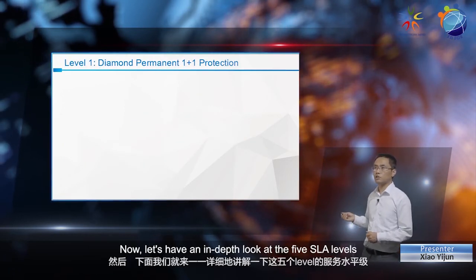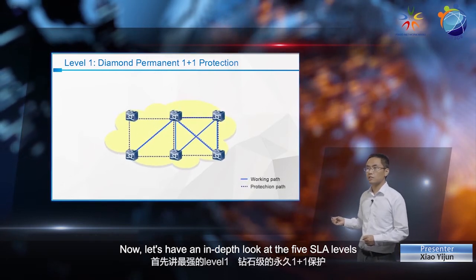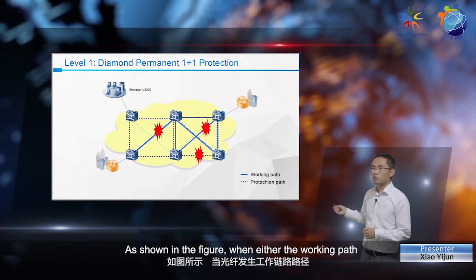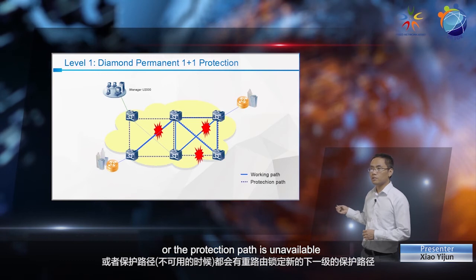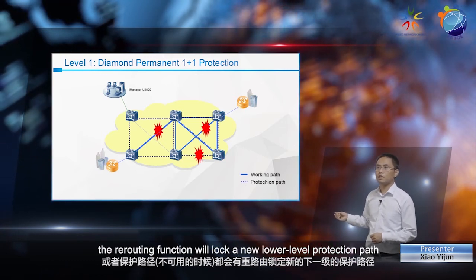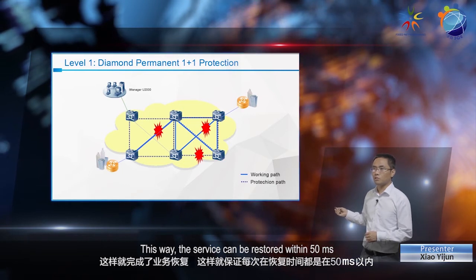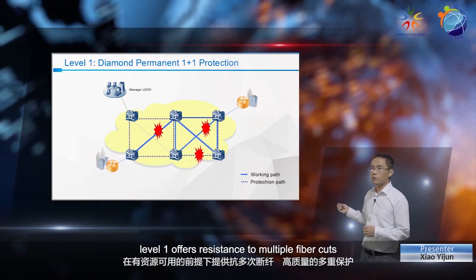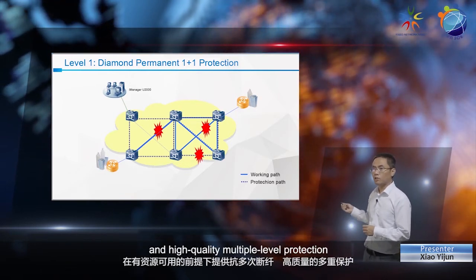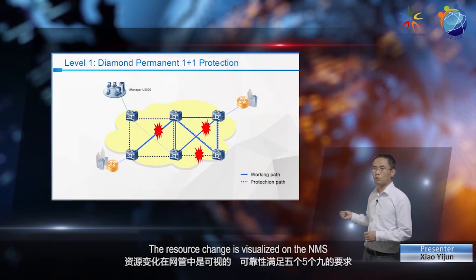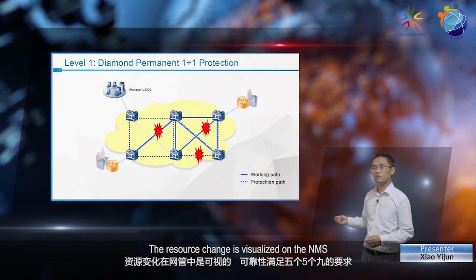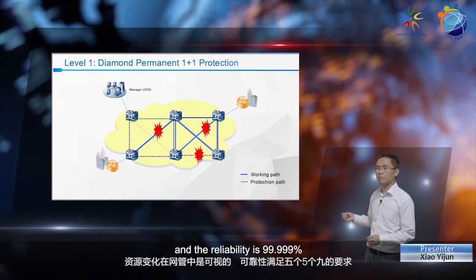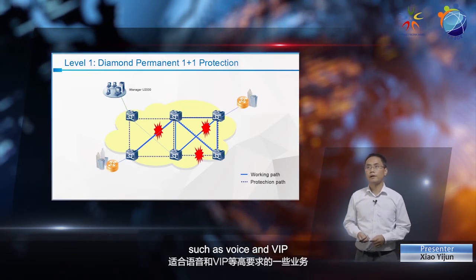Now let's have an in-depth look at the five SLA levels. Level 1 offers diamond permanent 1+1 protection. As shown in the figure, when either the working path or the protection path is unavailable, the rerouting function will lock a new lower level protection path. This way, the service can be restored within 50 milliseconds for the first and subsequent faults. When resources are available, Level 1 offers resistance to multiple fiber cuts and high quality multiple level protection. The resource change is visualized on the NMS, and the reliability is 99.999%, making it suitable for the protection of high demand services such as voice and VIP.